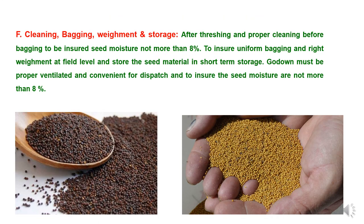For cleaning, bagging, weighment, and storage: after threshing and proper cleaning, before bagging, ensure seed moisture is not more than 8%. Ensure uniform bagging and proper weighment at field level, and store the seed material in short-term storage. The godown must be properly ventilated and convenient for dispatch, ensuring seed moisture does not exceed 8%.